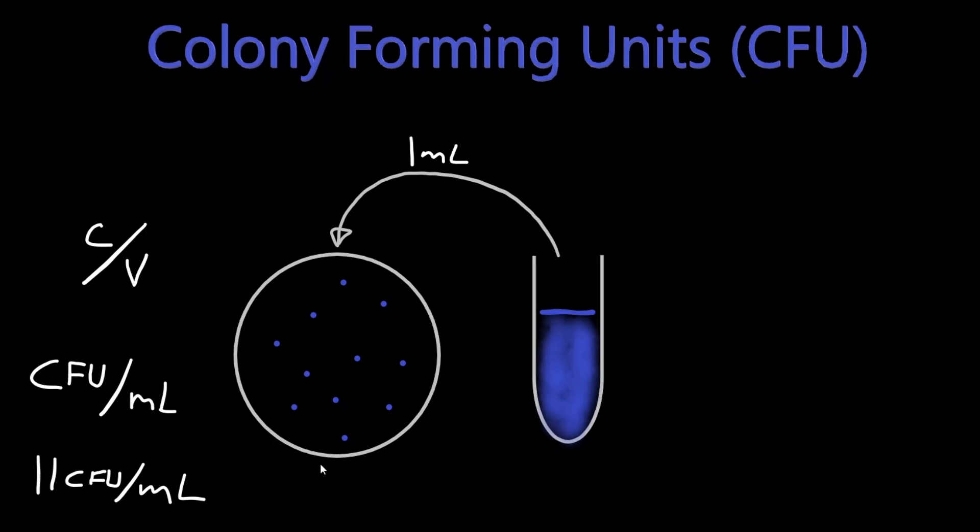Now this method, colony forming units, only counts the number of viable bacteria cells. Right, so dead or non-dividing bacteria won't make colonies, so in this method we aren't counting those.